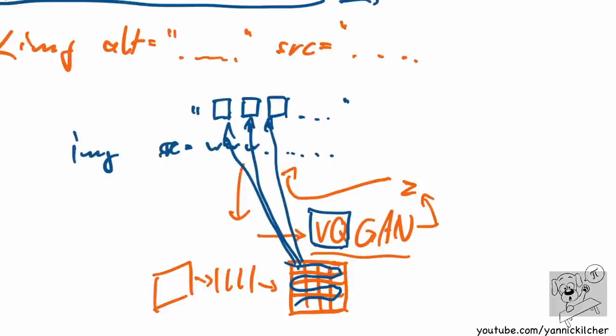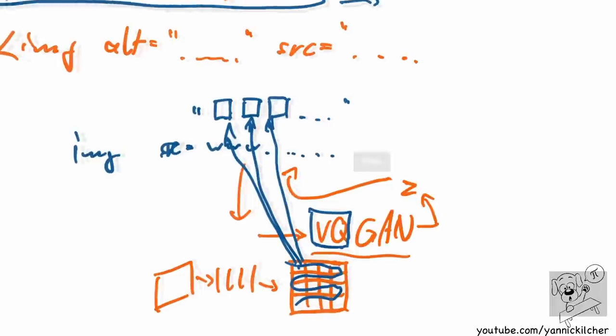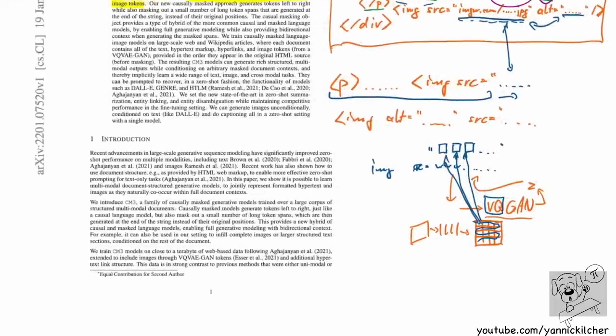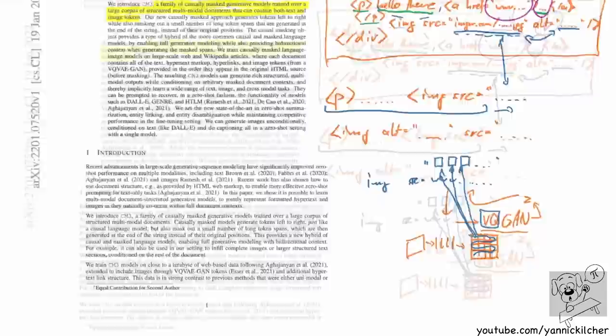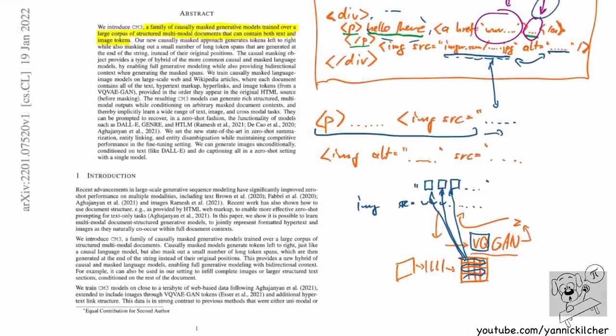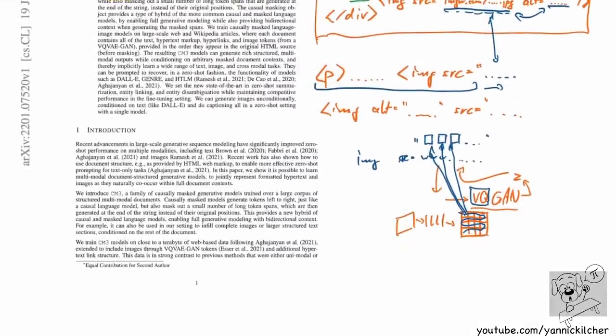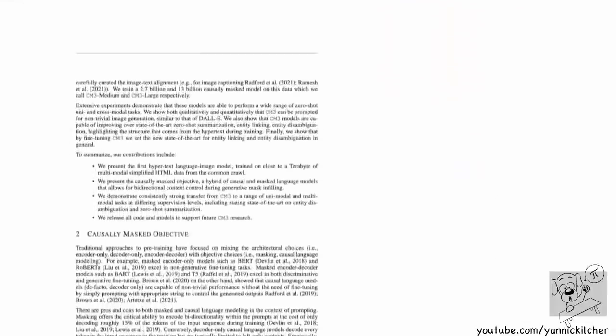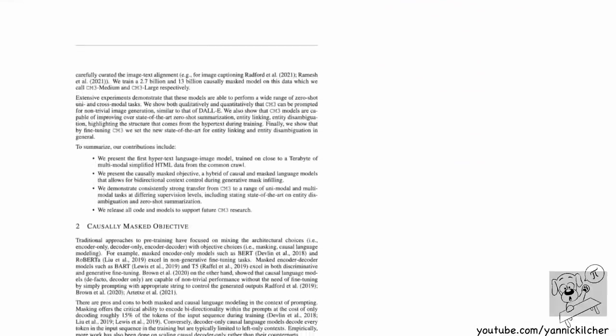There is a bit of a difference in how these things are distributed - language tokens are Zipfian distributed and image tokens are by design uniformly distributed. But from a conceptual standpoint, it's essentially the same.